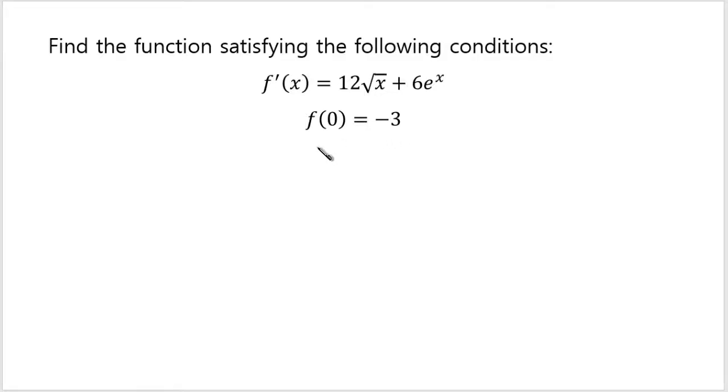Such a problem is called an initial value problem. It's because in physics, often when the velocity is given as some function of time to figure out the position, you also need to be provided the initial velocity. That's where the name comes from. But for us the name is not too important. You just have to figure out what the function satisfying these two conditions should be.